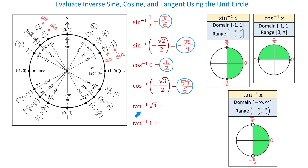Let's evaluate inverse tangent of square root of 3. On the unit circle, if we divide square root of 3 over 2 by 1 half, that gives us square root of 3. Also, if we divide negative square root of 3 over 2 by negative 1 half, that is also square root of 3. So we see two angles whose tangent is square root of 3: pi over 3 and 4 pi over 3. The right answer is pi over 3, because it is in the range between negative pi over 2 and positive pi over 2. So inverse tangent of square root of 3 is pi over 3.